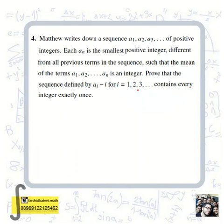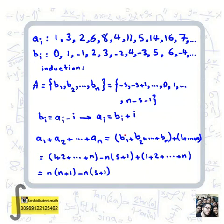We first consider a small example. a1: we want a1, a2, ... such that the mean is an integer, so we can put a1 = 1. Then 1 plus something over 2 must be an integer, so the next term must be odd. The smallest odd number not yet chosen is 3. Then we need the sum of three numbers to be a multiple of 3.